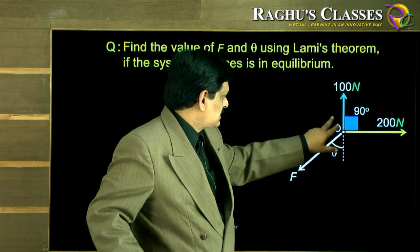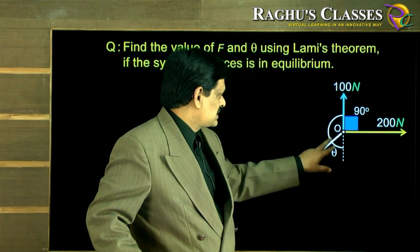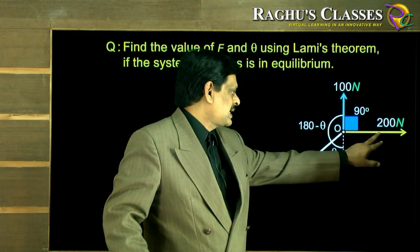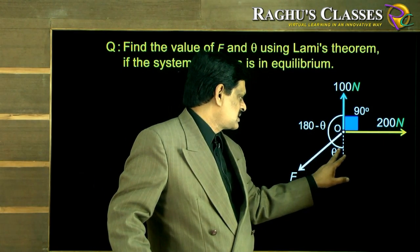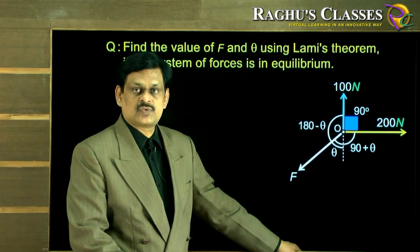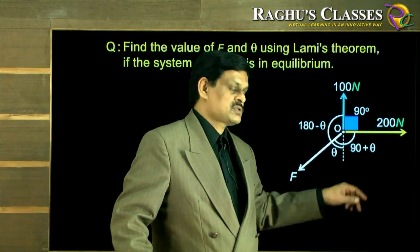So this force and this force, let this be the angle between them. Since this is theta and total is 180, we know this angle is 180 minus theta. And here the angle between this force and this force, this is theta, this is 90, so it is 90 plus theta. So we have all three angles, one known, the other two unknown but in terms of one unknown theta.